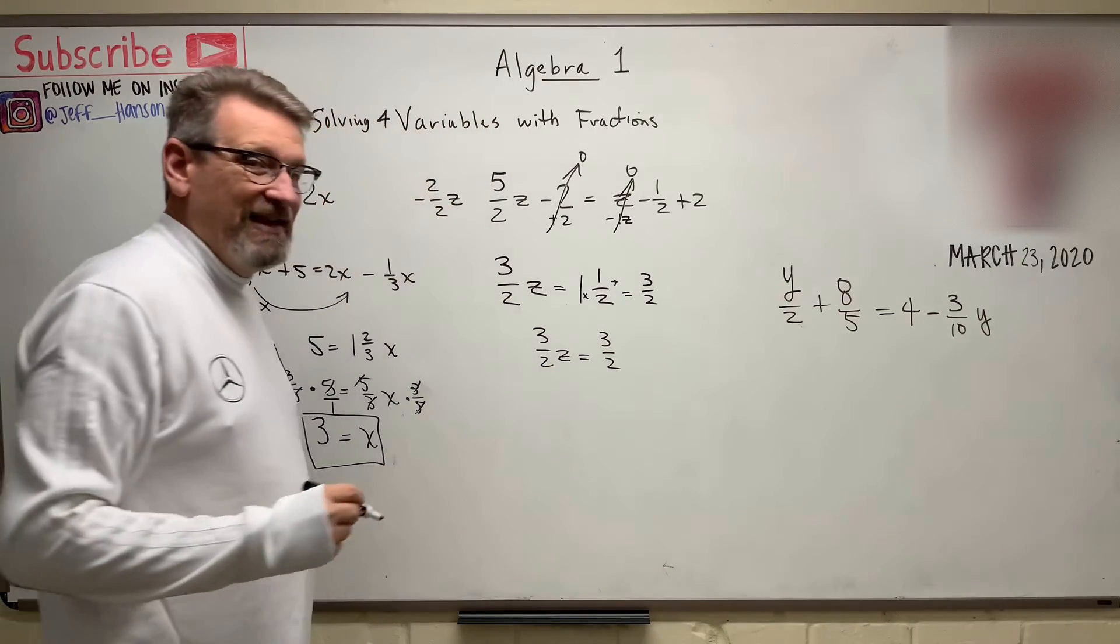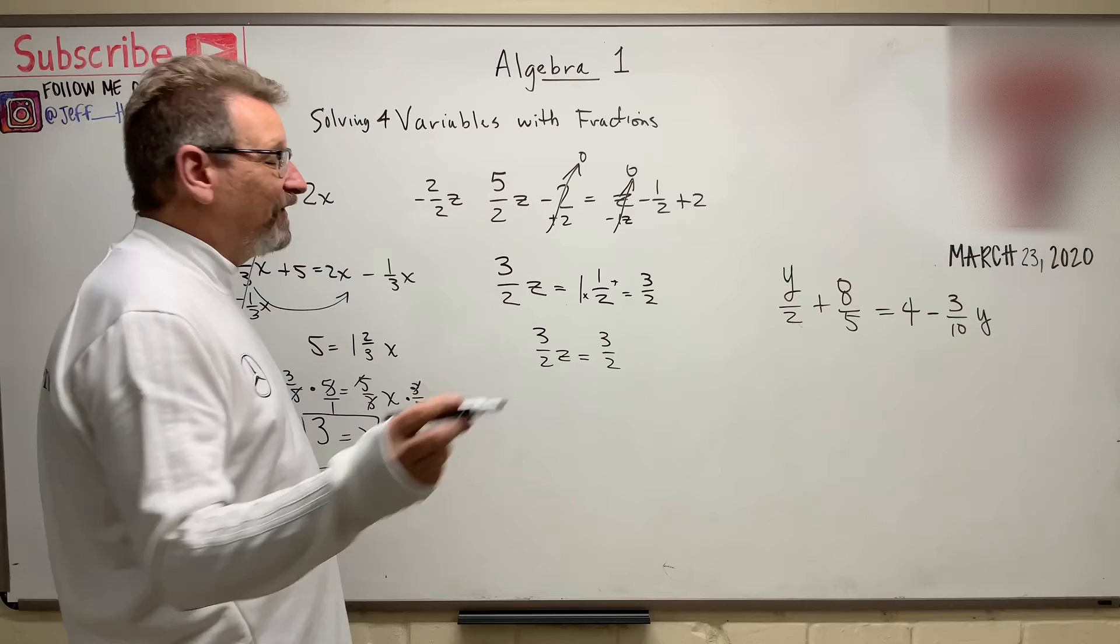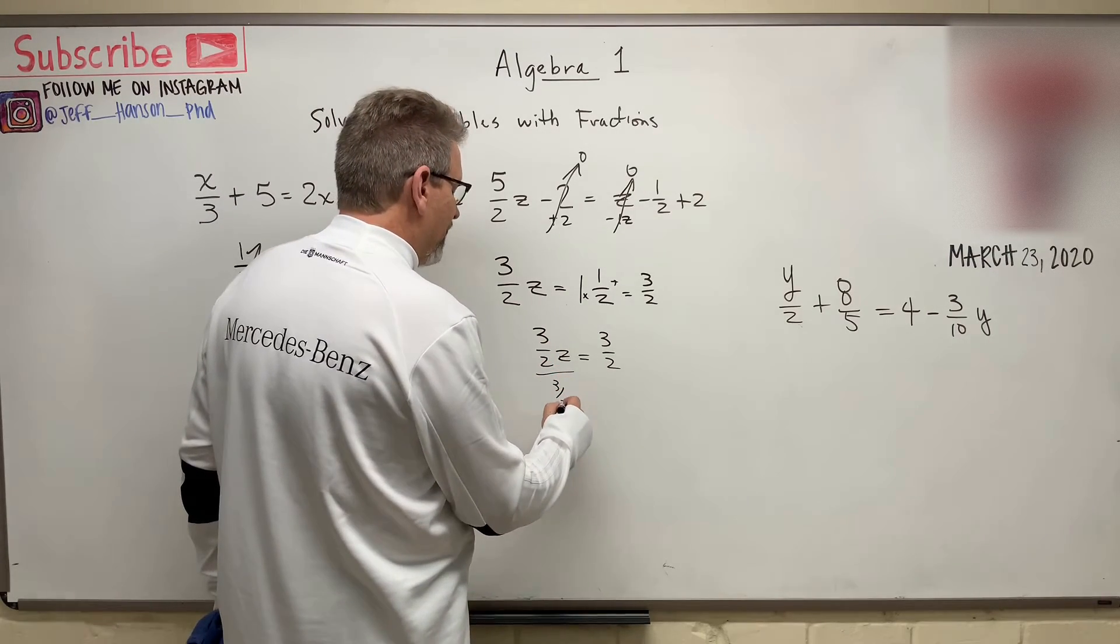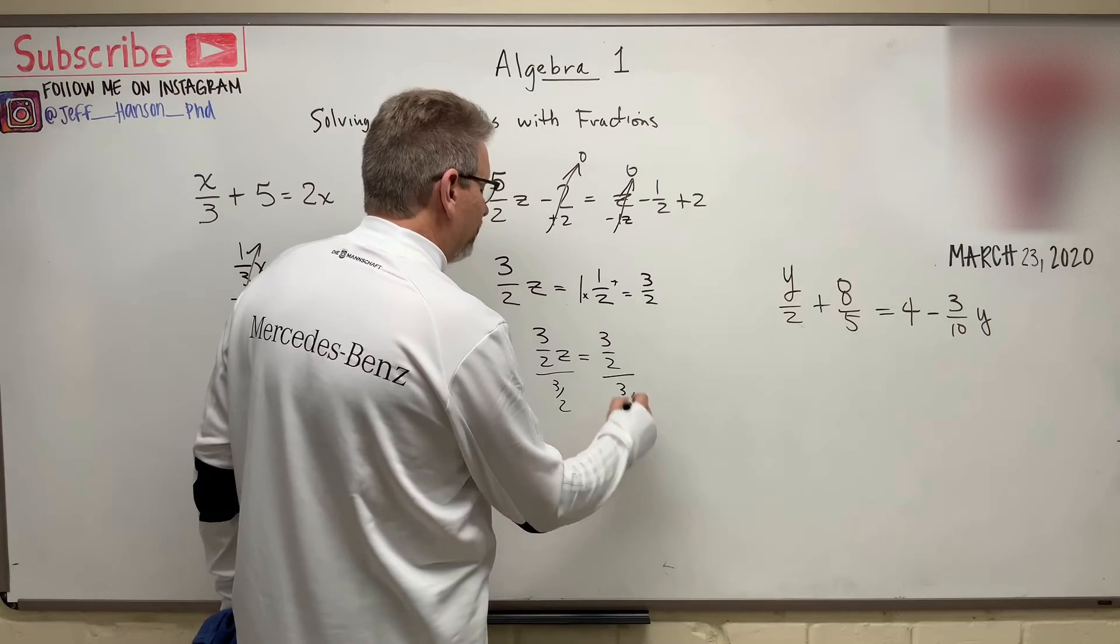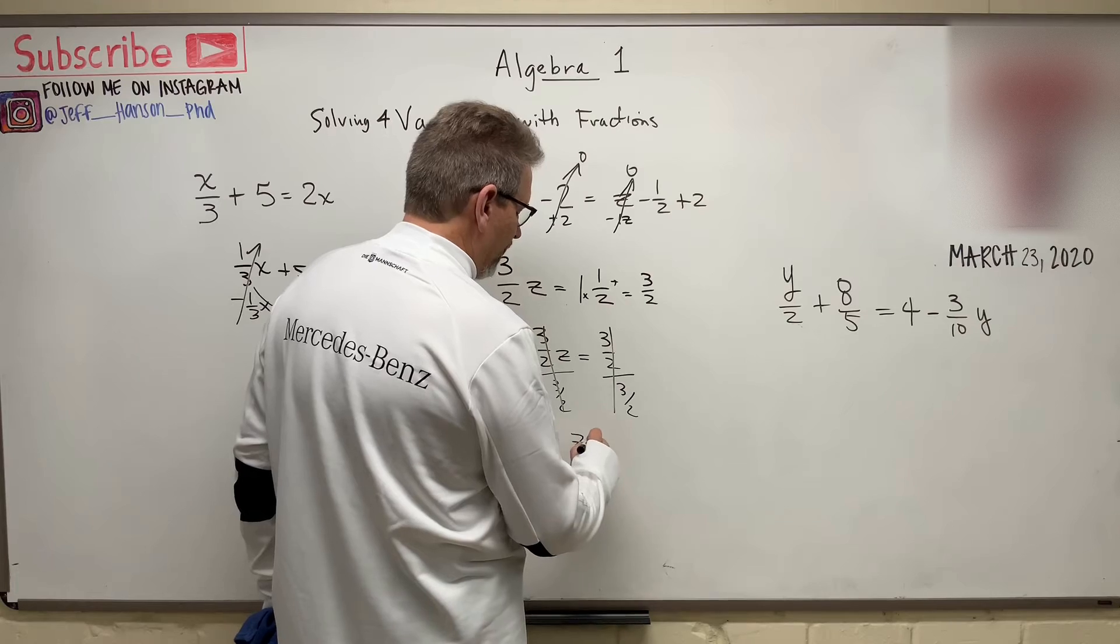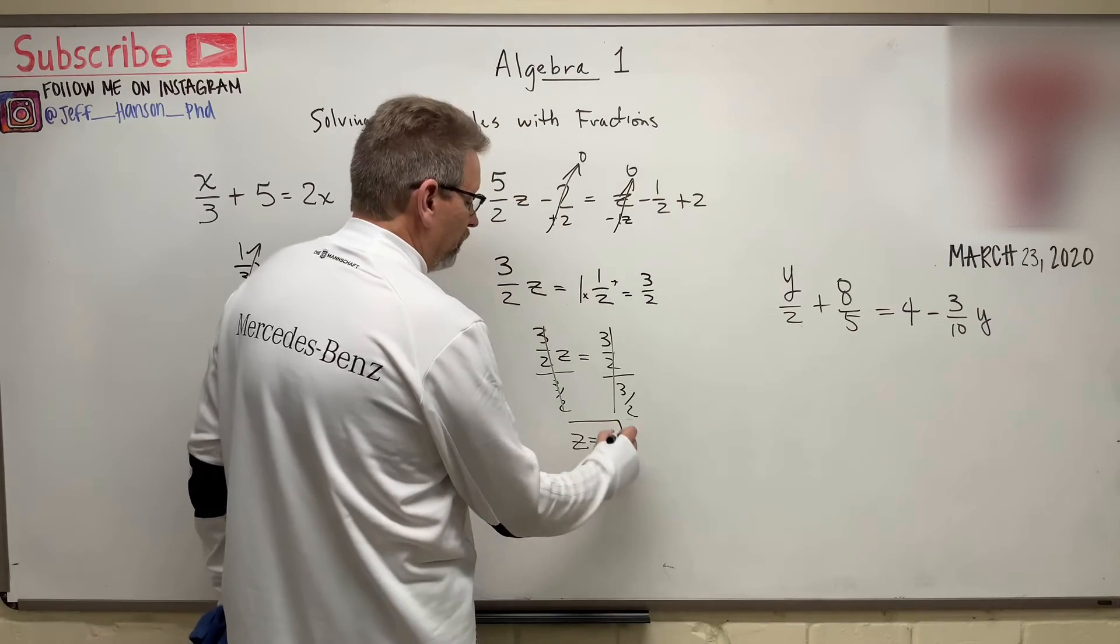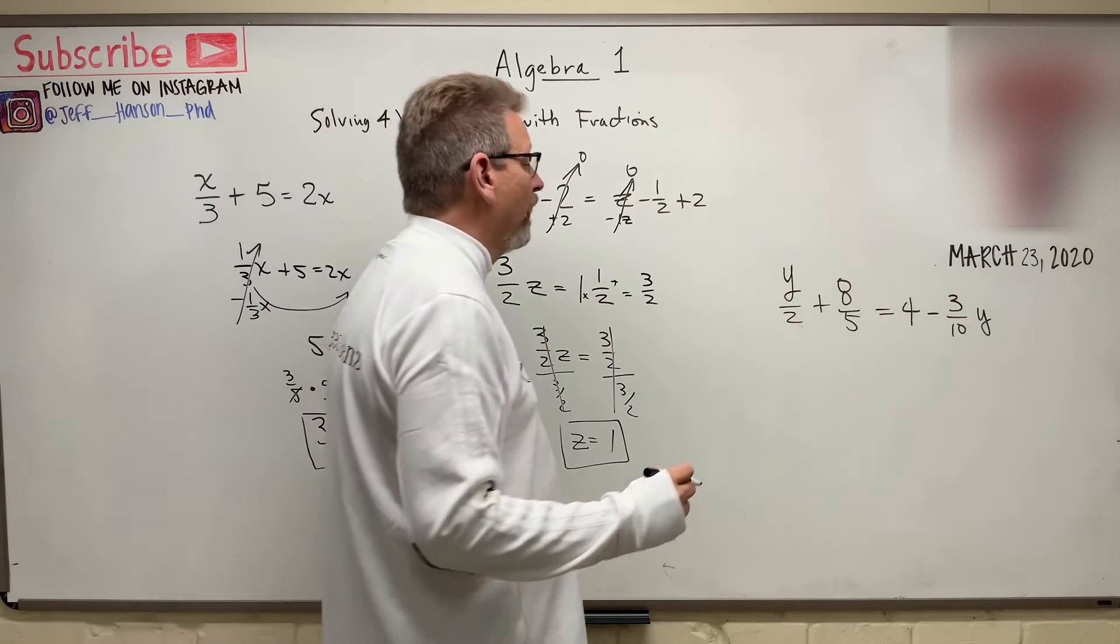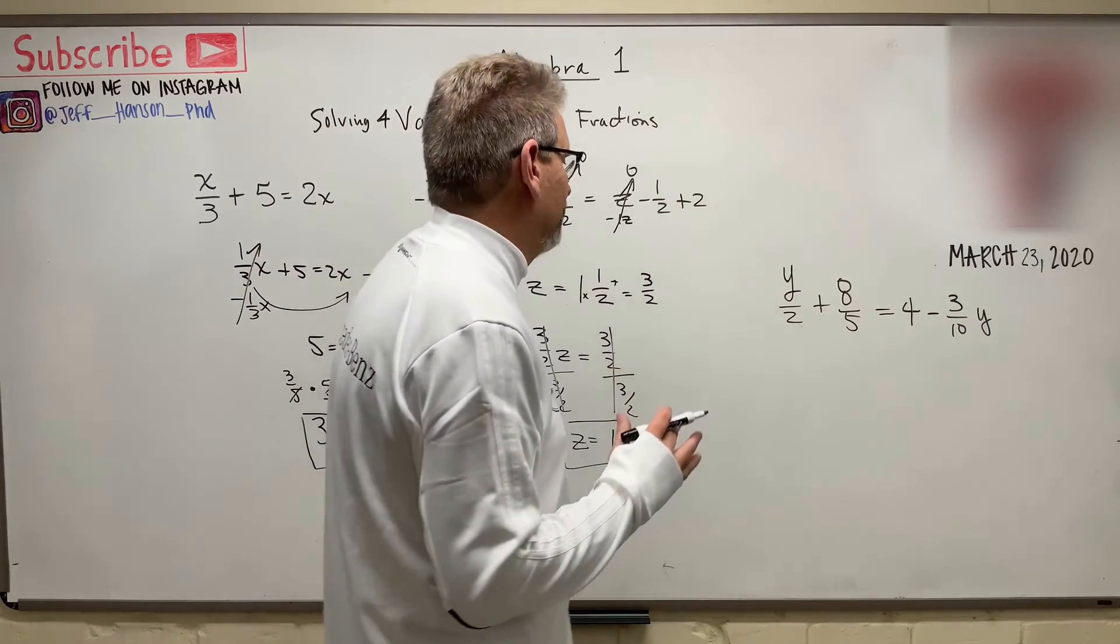You know what? This time it might be easier if I divide both sides by 3 halves. If I divide you by 3 halves and I divide you by 3 halves, that whole thing goes to 1, that whole thing goes to 1. So therefore, Z is equal to just 1. All right, one more gang, here we go.